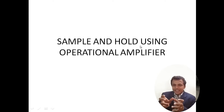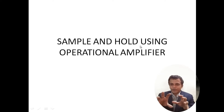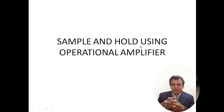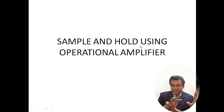We have to decide the time period for which sampling should be performed and the time period for which holding operation should be performed. We have to give a control signal to perform these operations. When we look into the circuit of the sampling and holding circuit using operational amplifier, the operational amplifier should be there, and the signal which has to be sampled and held is given to one point, and the controlling signal has to be given.